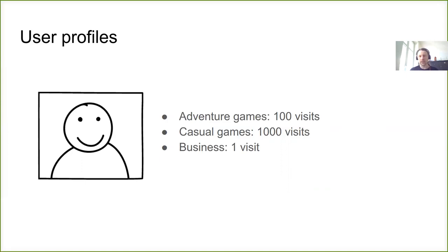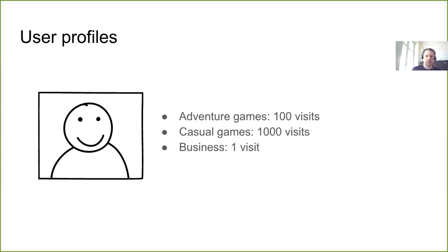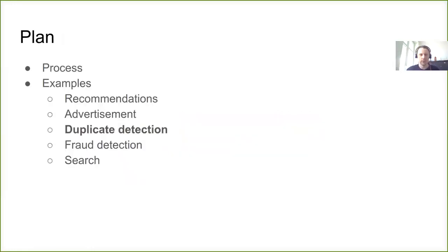Based on that, we can decide what the interests of this user are and what kind of ad we can show. If we have a casual game we are advertising, for this user who is probably interested in casual games, we can simply show them that app ad. Again, with no machine learning.